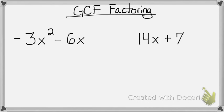Looking at the first example, all you're basically doing is trying to find the largest number that you can divide into both of your numbers. So the largest number that I can divide into negative 3 and negative 6 is negative 3. Then looking at both of my variables, I will choose the smallest one. So between x squared and x, x is the smallest one. So negative 3x is my GCF.